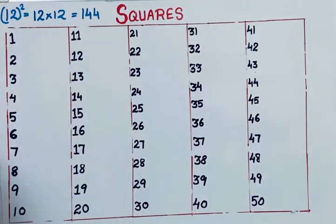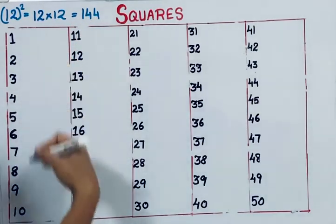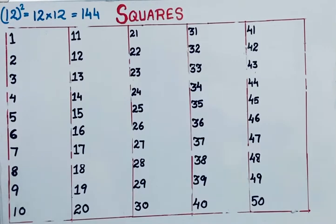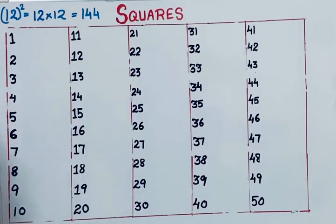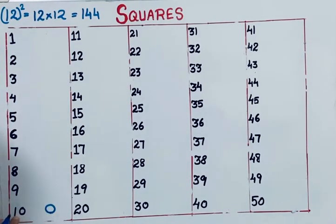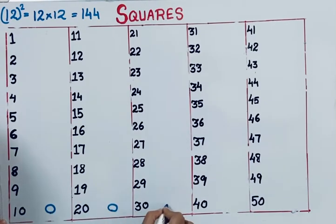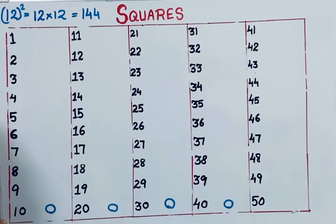So how do we find the squares of these numbers? Let's fill them in. First step: fill the unit digits. If a number ends with 0, its square will end with 0. So 10 squared ends with 0, 20 squared ends with 0, 30 squared ends with 0, 40 squared ends with 0.